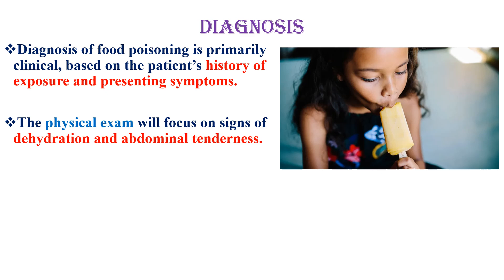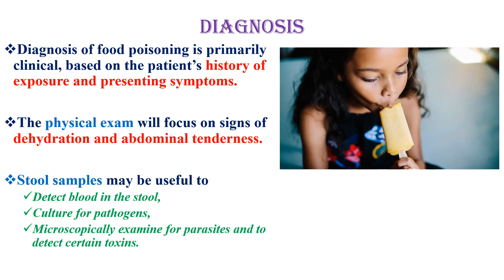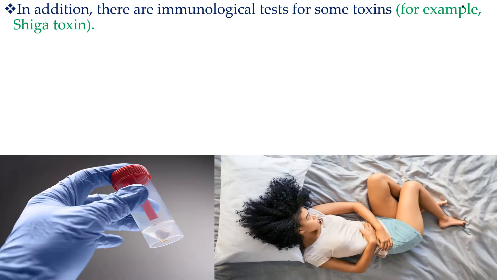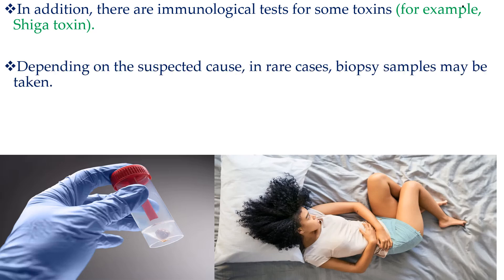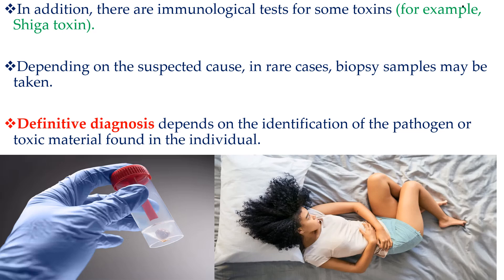Diagnosis of food poisoning is primarily clinical, based on the patient's history of exposure and presenting symptoms. The physical exam will focus on signs of dehydration and abdominal tenderness. Stool samples may be useful to detect blood in the stool, culture for pathogens, and microscopic examination for parasites. Blood tests, if necessary, might be used to identify complications or rule out other problems. In addition, there are immunological tests for some toxins such as Shiga toxin. Definitive diagnosis depends on the identification of the pathogen or toxic material.